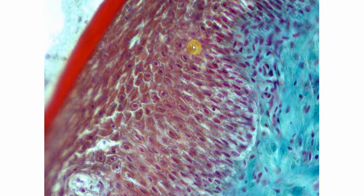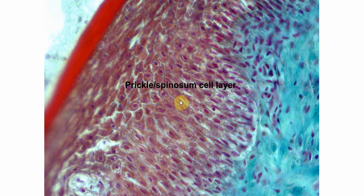This cell layer is the spinous layer and these cells have an ovoid shape. You can see, for example, this cell — these cells are more ovoid in shape.